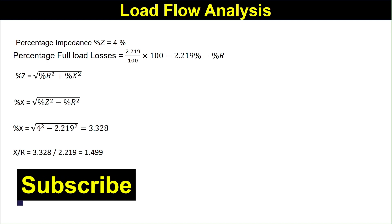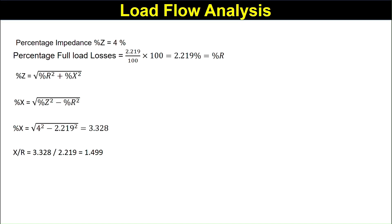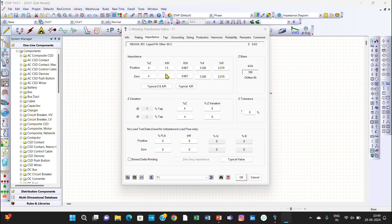Now, we will compare these results with the ETAP result. See, this is the ETAP. The result has the percentage impedance is 4, X by R is 1.5 and we have calculated 1.4999, that is 1.5 and percentage R is 2.219.